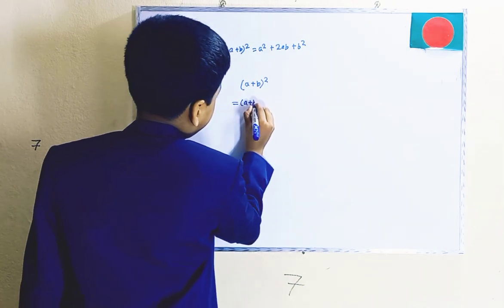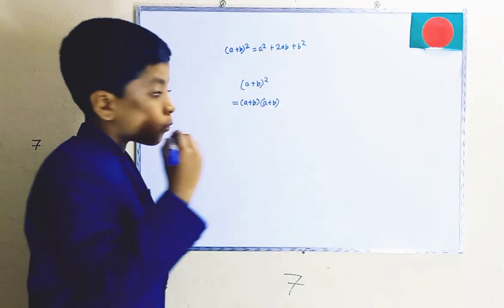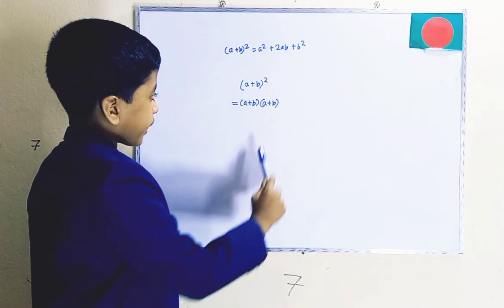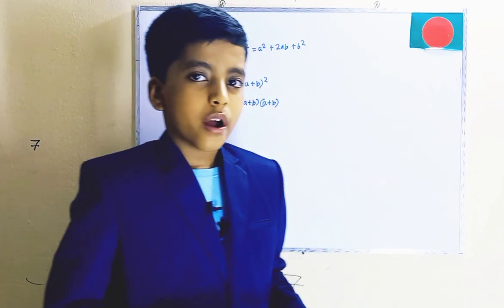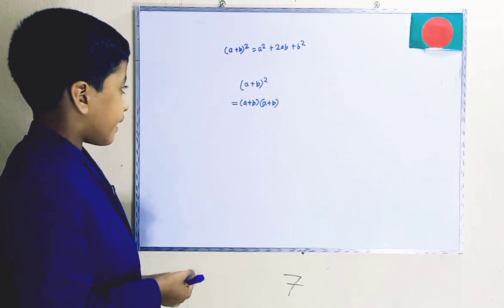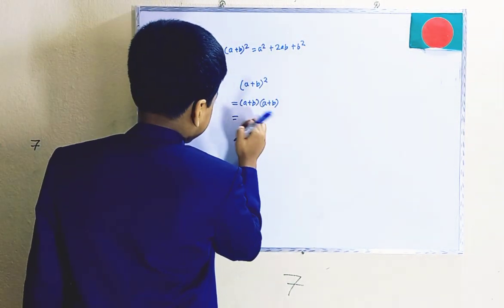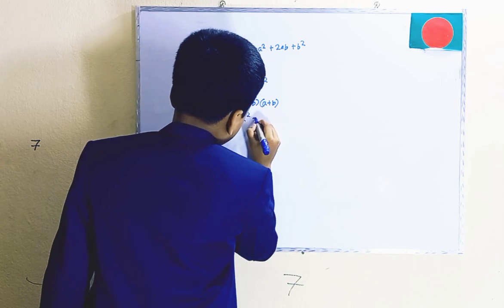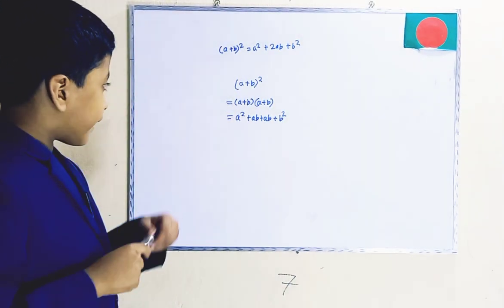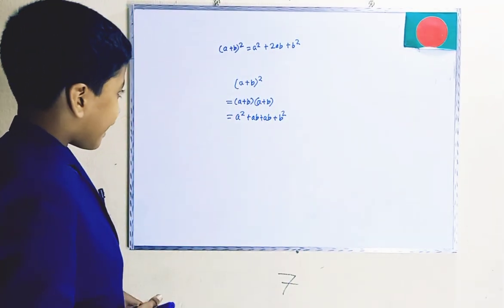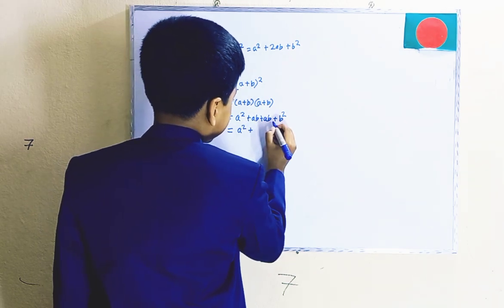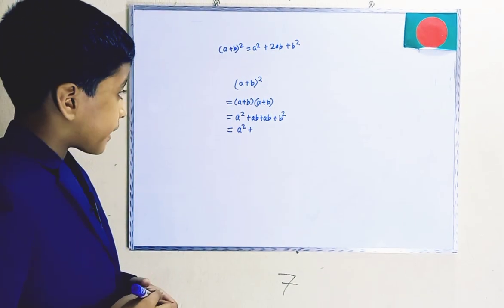Now, as we know, (a+b) times (a+b) — we can prove it even further. How do we multiply these? We will learn that in a future video, but for now let me present the answer: that is a² + ab + ab + b². Nothing special about a², but here's the special part: plus ab plus ab.